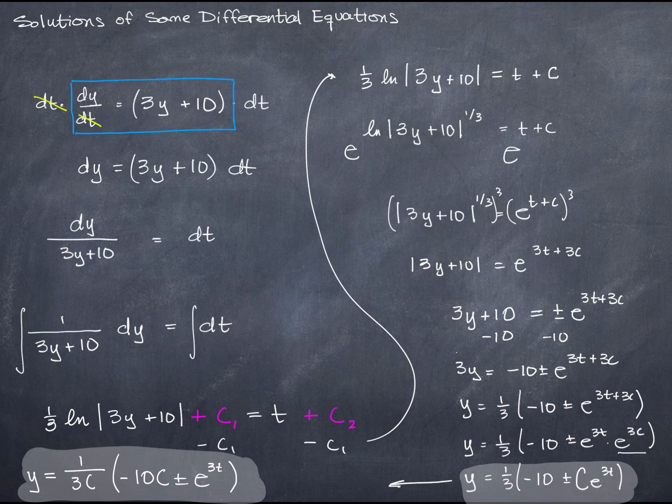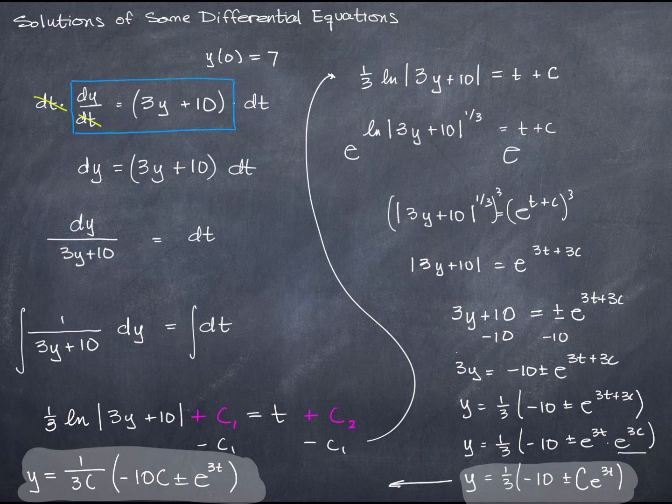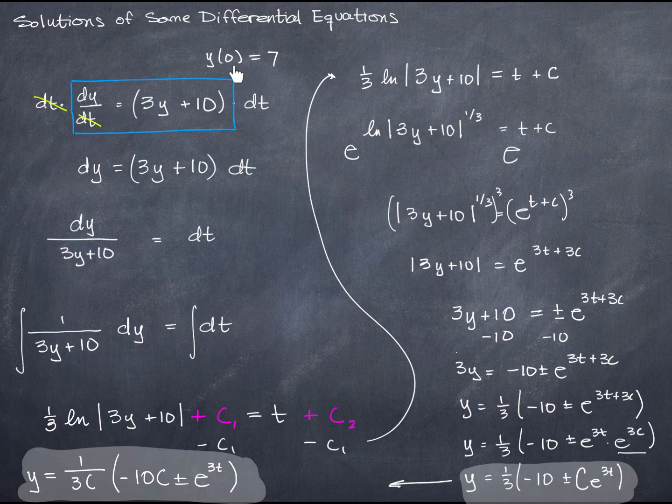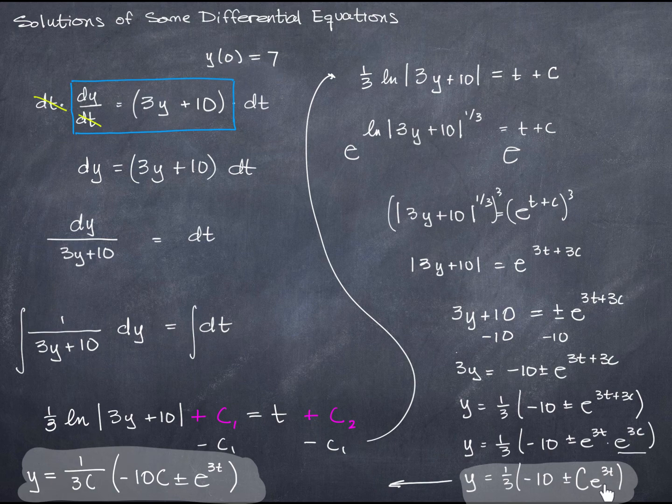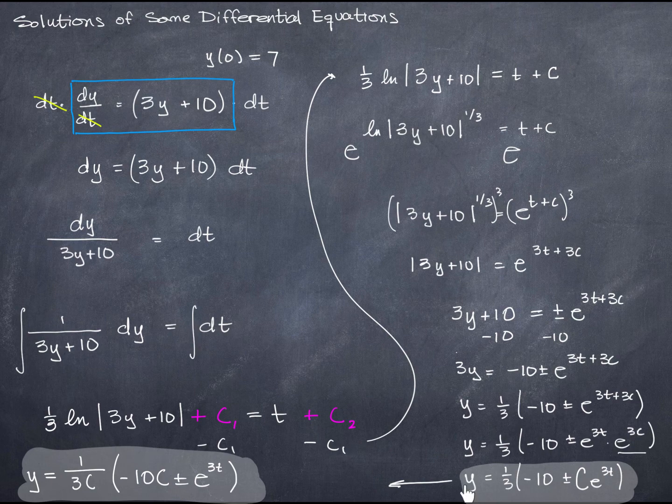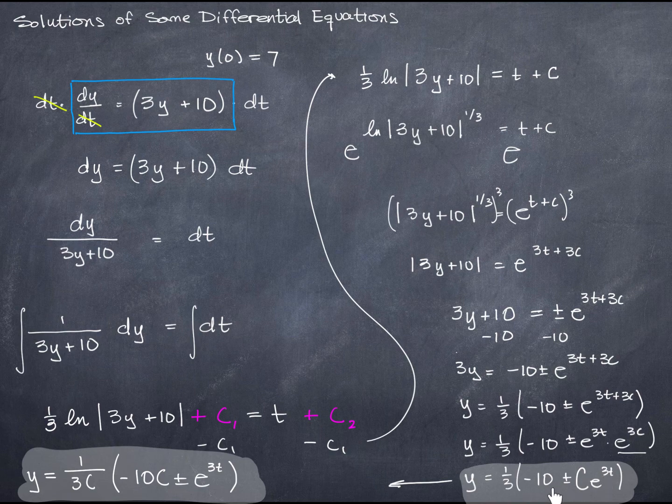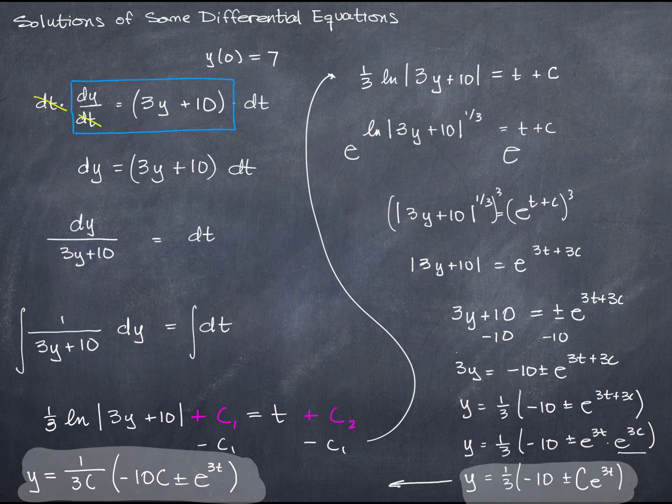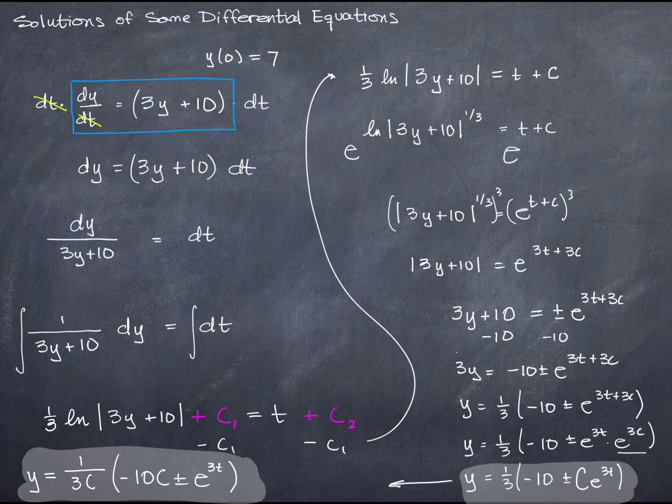This is a general solution in fact we would say it's the general solution if I knew what c was then we would call that a particular solution in order to figure out what c is the information that I need the additional information that I need is at least one set of conditions that tells me what a value for y is when I know a value for t and those conditions are usually something like y of 0 equals 7 I'm just making this one up because I don't really have any context to hang it on.